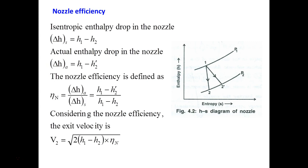Nozzle efficiency: the flow is assumed isentropic. On the H-S diagram, for isentropic flow entropy is constant, giving a vertical line from inlet to outlet where S₁ = S₂. The isentropic enthalpy drop is ΔHs = H₁ − H₂. Isentropic means reversible and adiabatic. Adiabatic can be achieved by insulating the nozzle (Q = 0). Reversible requires no friction, but friction cannot be completely eliminated in a steam nozzle.